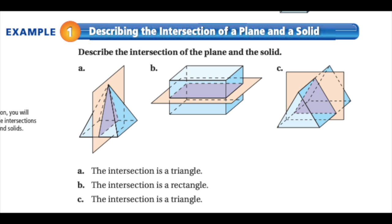And then the last one, C there, we are looking at a triangular prism. And so when they do a cross-section of that, we again see a triangle. And so the only thing that you need to answer for these questions is the intersection is a triangle, the intersection is a rectangle, and so on.